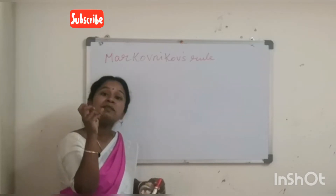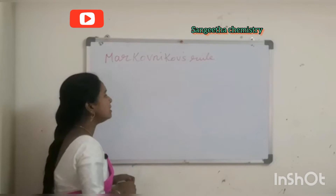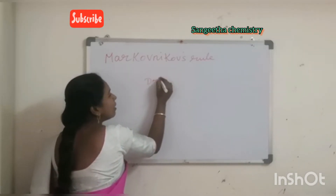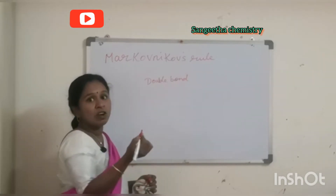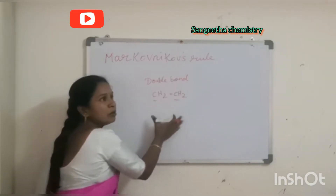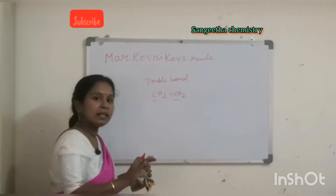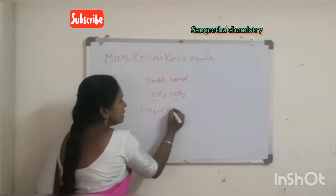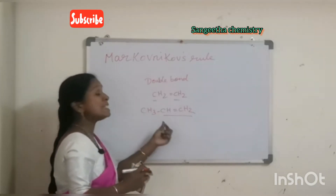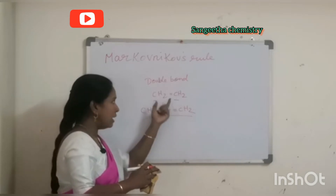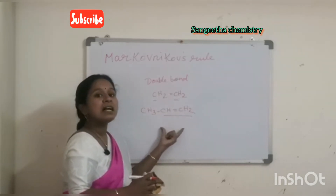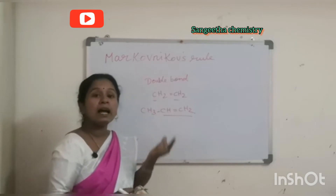When we have an unsymmetrical alkene — first of all, what is an alkene? For example, CH2=CH2 is a symmetrical alkene. But CH3-CH=CH2 is not symmetrical, because the two sides of the double bond are not the same. So it is an unsymmetrical alkene.